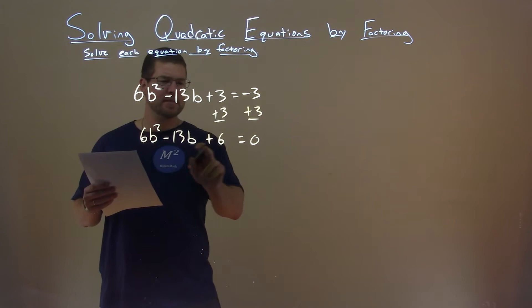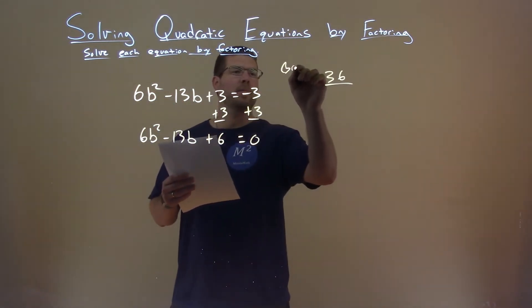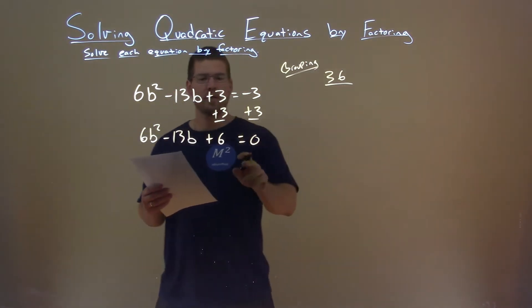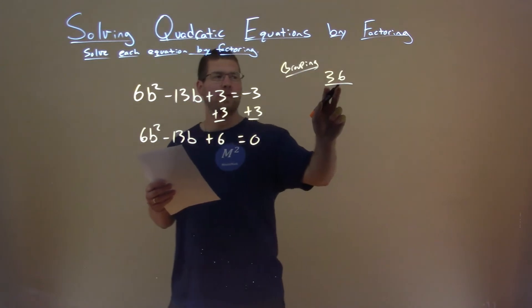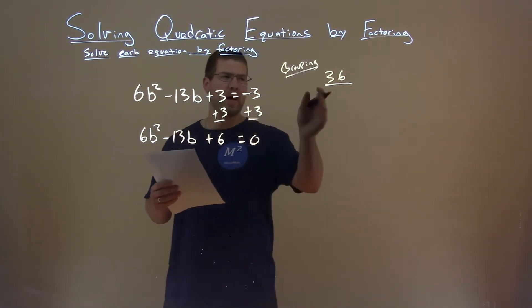So, I'm going to take 6 and times it by 6, and that gets me 36. So, again, we're doing grouping here. Now I want to see, we have to have two numbers that multiply by 36, but they're going to add to be a negative 13. So the positive 36, so both numbers will be negative here.